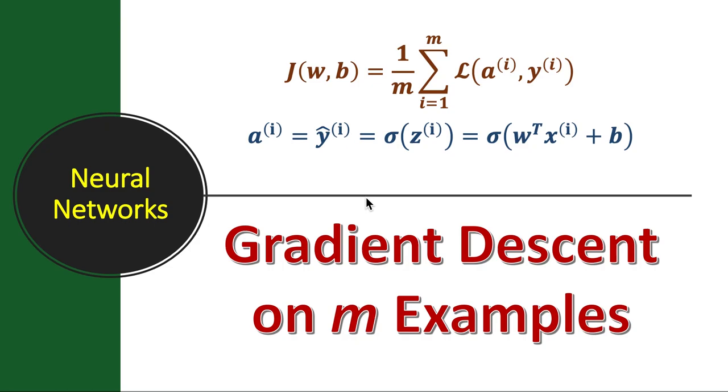In the previous video we saw one step of gradient descent on one training example for logistic regression. In this lesson we will continue with that concept and go further by doing it on m training examples.